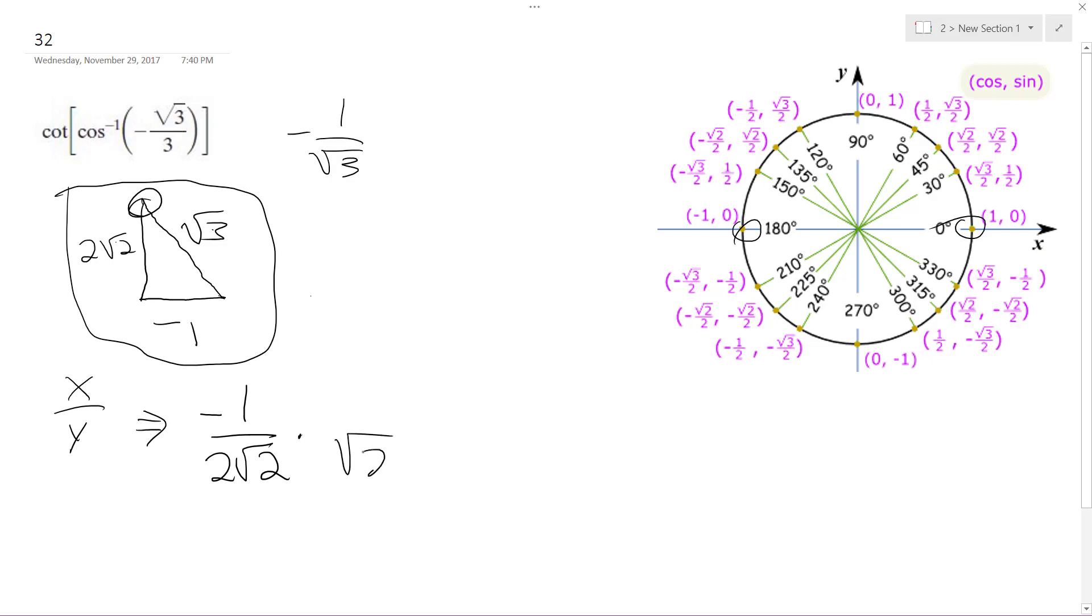So then we rationalize: root two over root two, and we end up with negative root two over four.